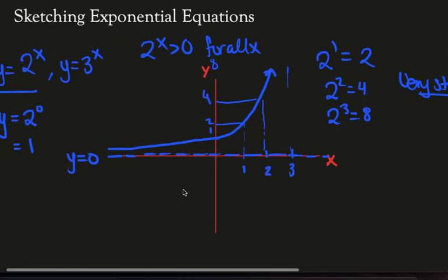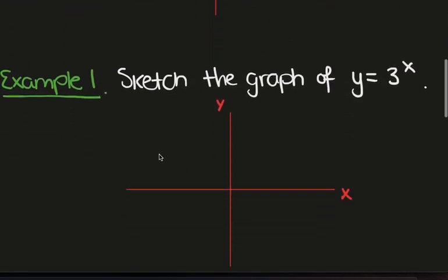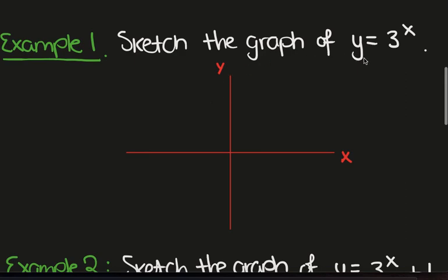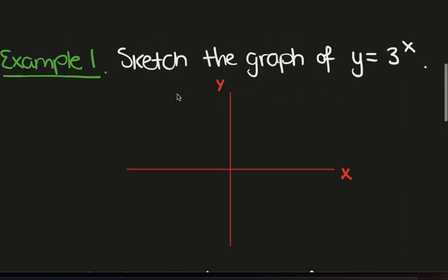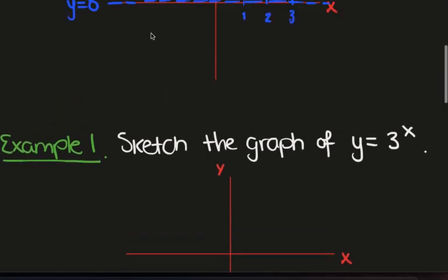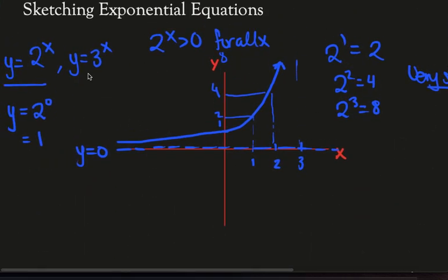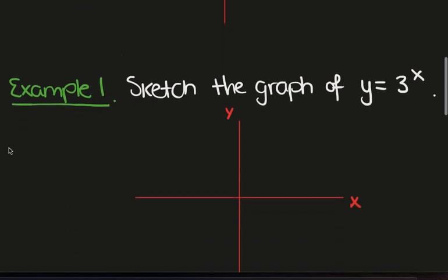Okay, so let's look at another example. Sketch the graph of y equals 3 to the x. Well, nothing really in the previous example depended on the fact that we used 2. If we look at y equals 3 to the x, almost the same thing happens. We see that if we look at the y-intercept, y equals 3 to the 0, that's still 1. So I'll have a 1 here.